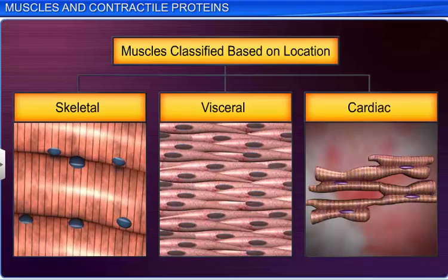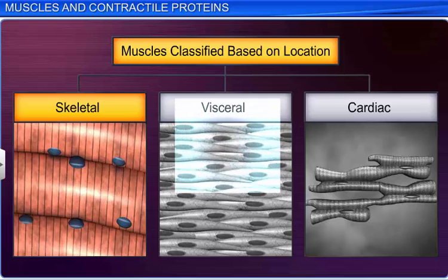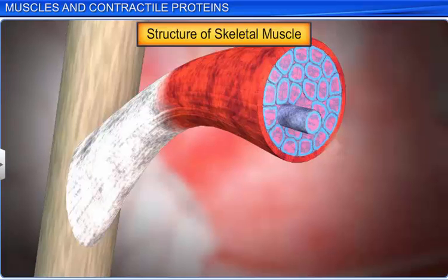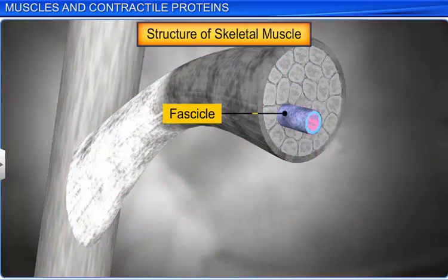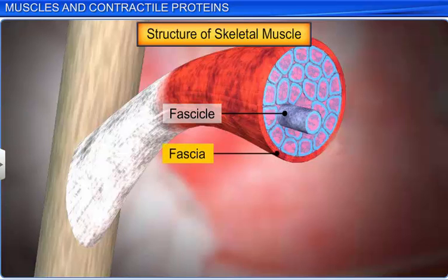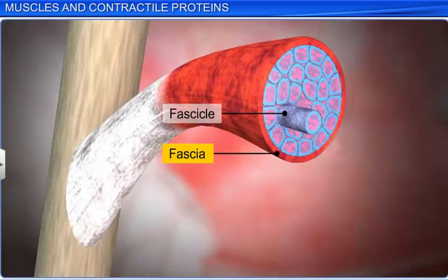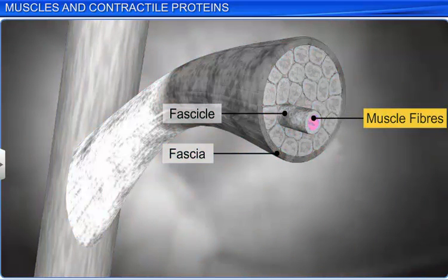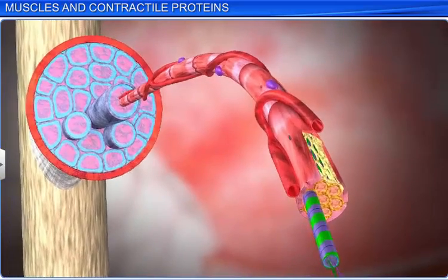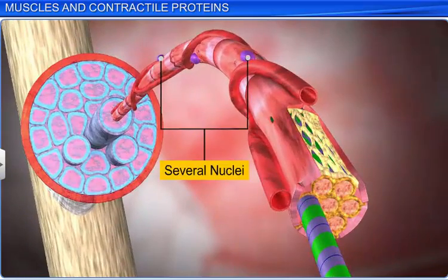All these three types of muscles have a complex structure. Let's take a look at the structure of a skeletal muscle. Each skeletal muscle consists of many muscle bundles called fascicles, that are held together by a collagenous connective tissue layer called fascia. Each muscle bundle consists of many muscle fibers, where each fiber exhibits a syncytium condition, which means the sarcoplasm contains several nuclei.